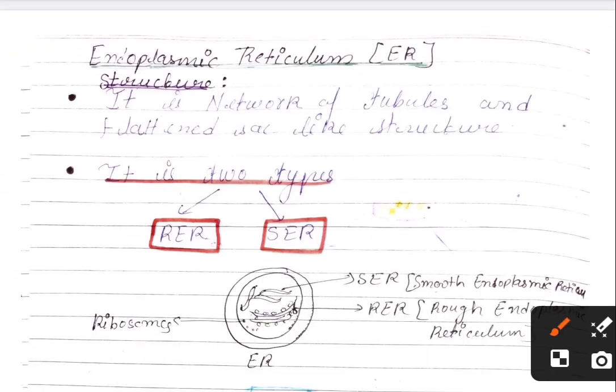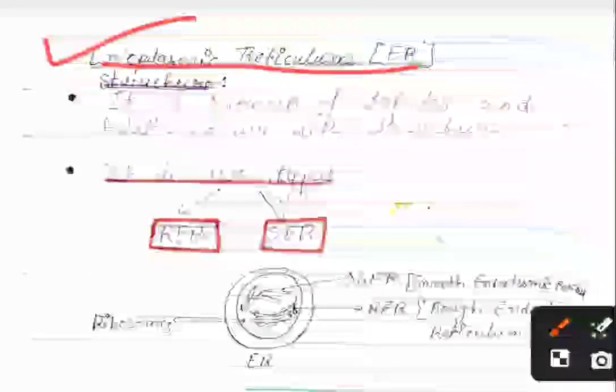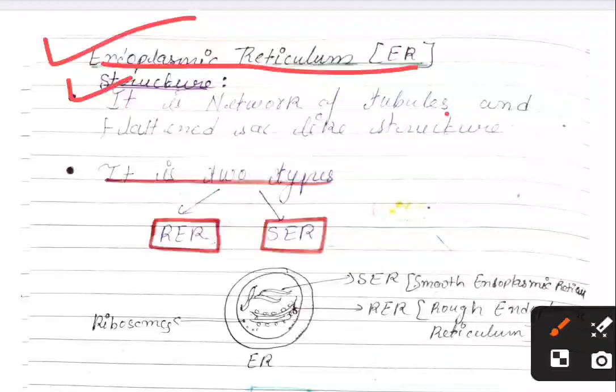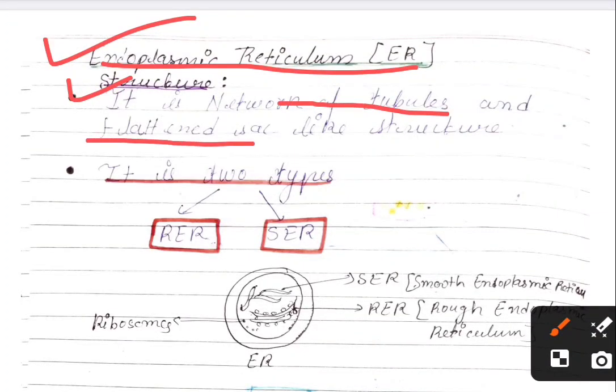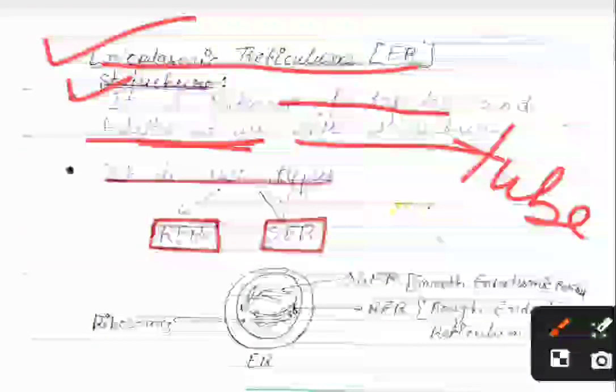Let us discuss different types of cells, their structure and function. First, the endoplasmic reticulum (ER) is a network of tubules and flattened sac-like structures within the cell.